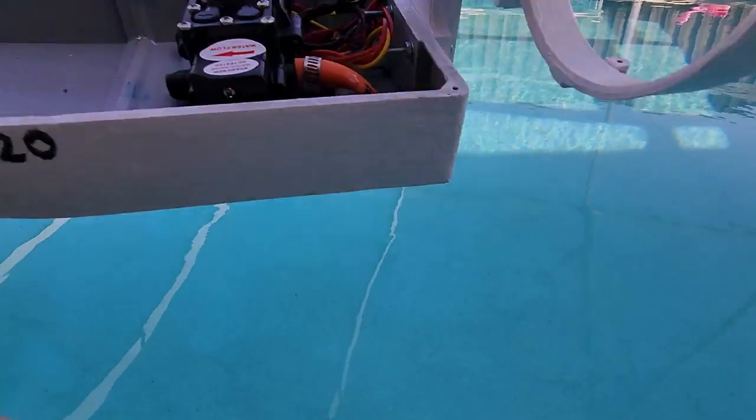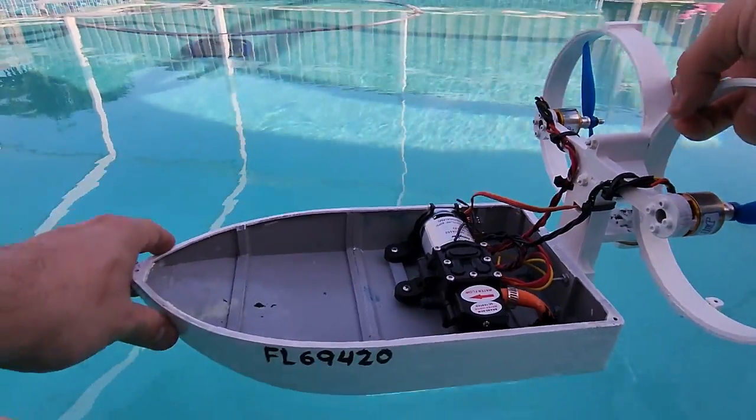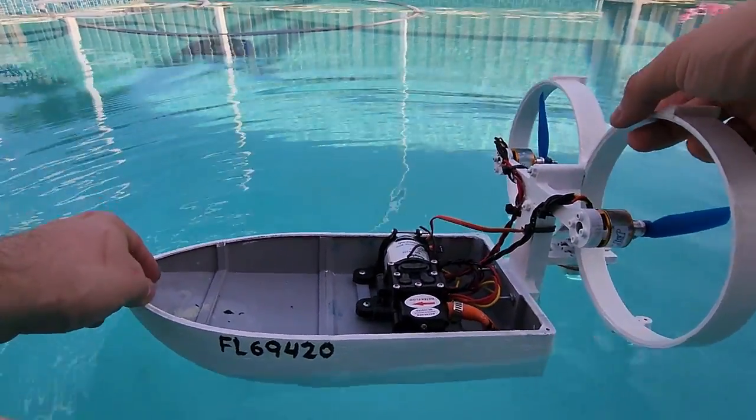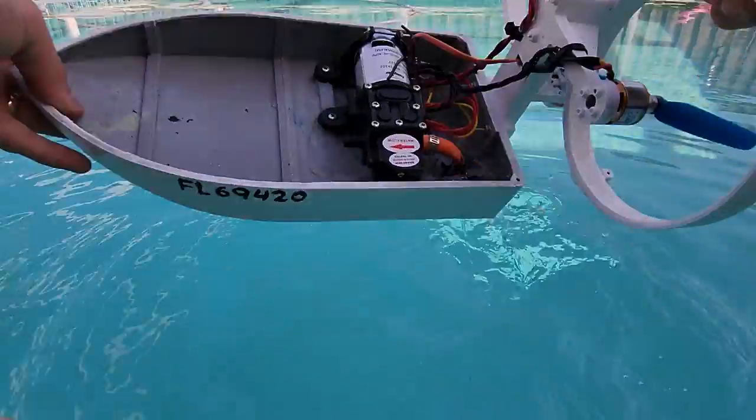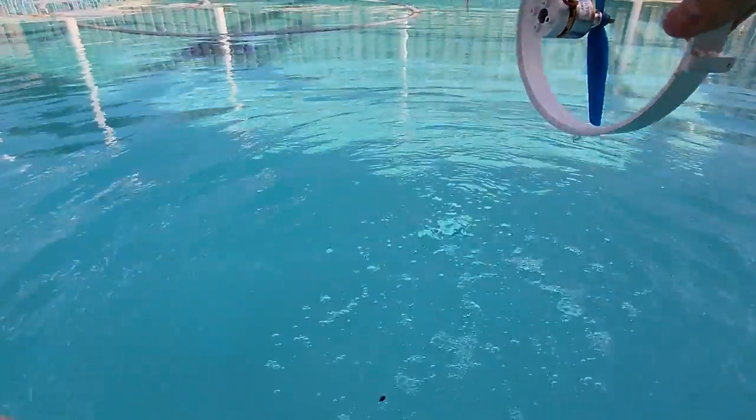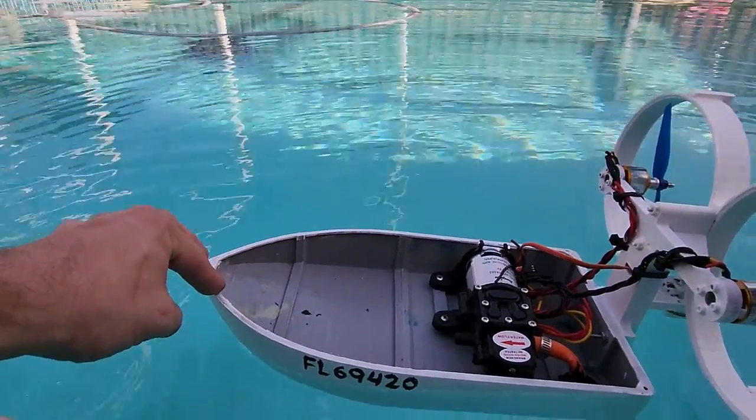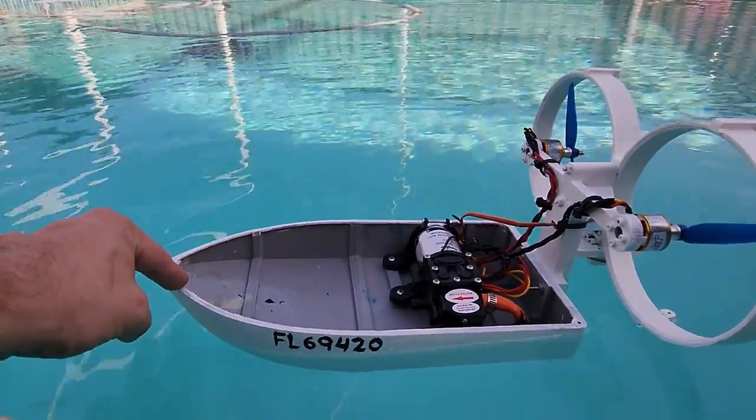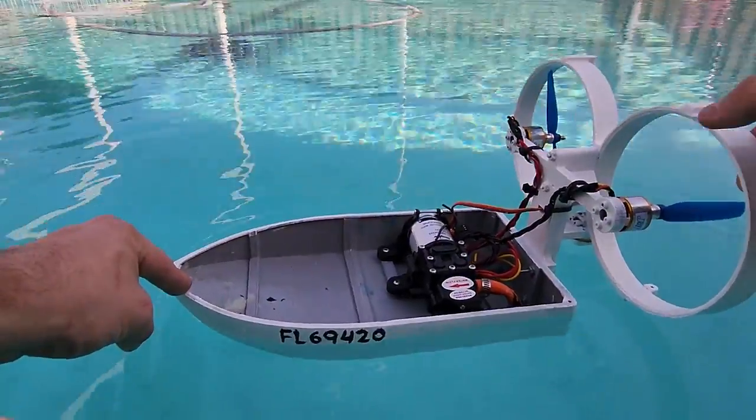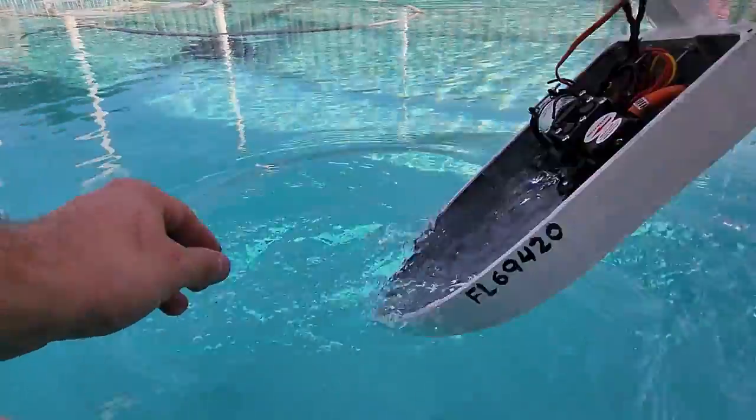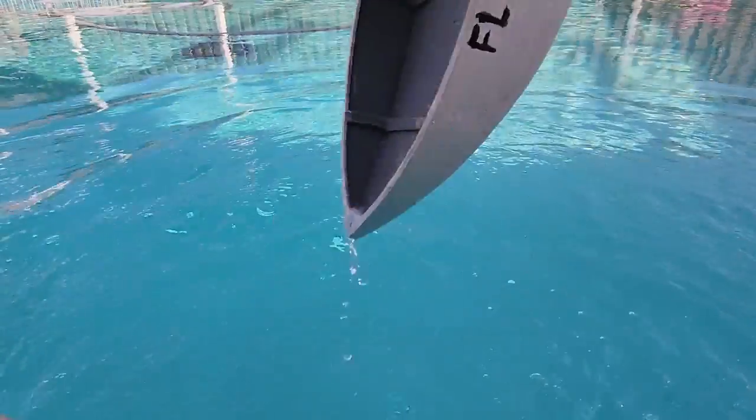Once the sealant dried I did a quick float test before continuing with the build. Come to find out I had some major problems. First of all, as you can tell, the CG is way too far back. But in addition to that, the hull is pretty close to its carrying capacity. Even if I placed the battery and speed controllers at the very front of the boat, it would still fall over backwards. Also, the hull was kind of narrow and that made me wonder if it would also flip over to one side.